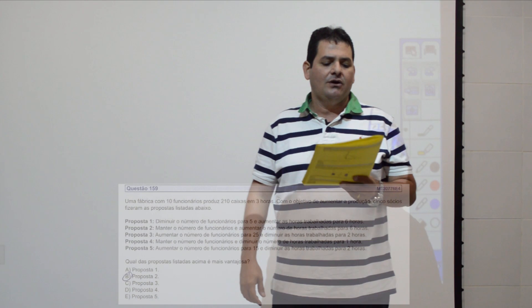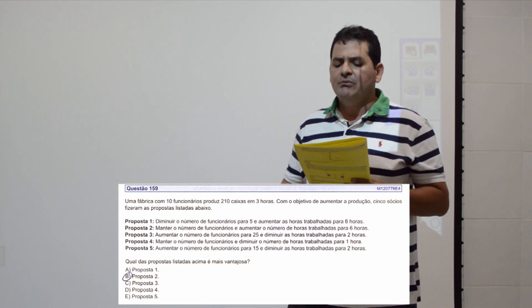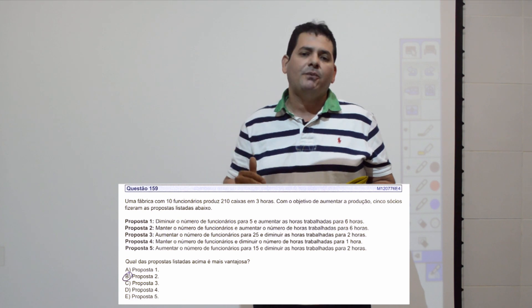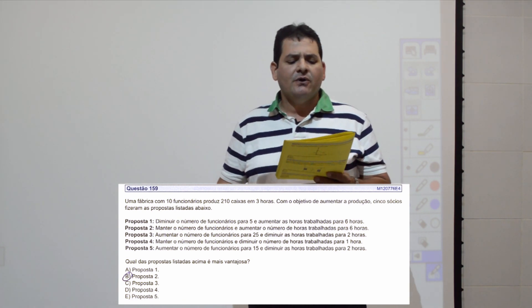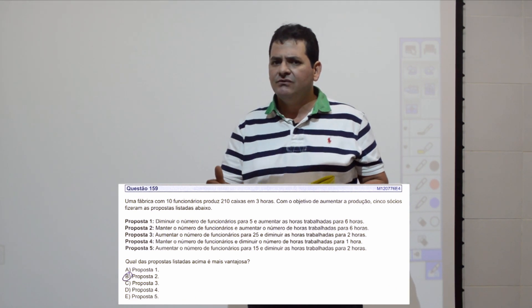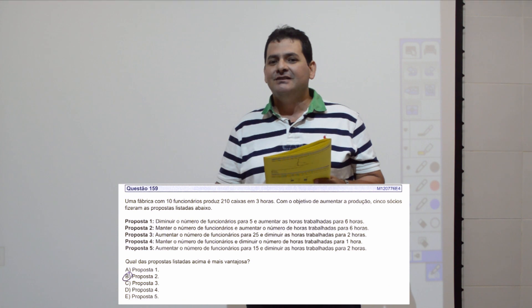Questão 159: uma fábrica com 10 funcionários produz 210 caixas em 3 horas. Cinco sócios fizeram propostas para aumentar a produção. Proposta 1: diminuir para 5 funcionários e aumentar horas para 6. Proposta 2: manter 10 funcionários e aumentar horas para 6. A proposta 2 vai aumentar a produção e manter o custo — é a melhor opção. Item B.